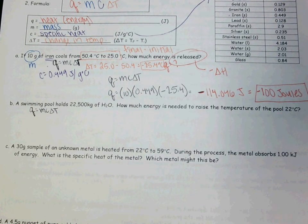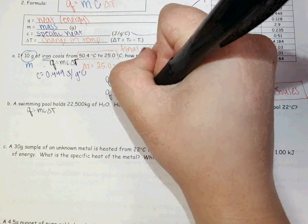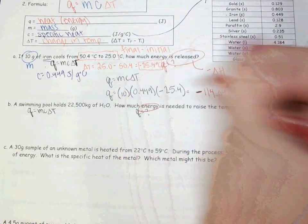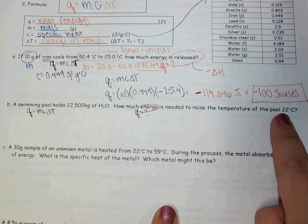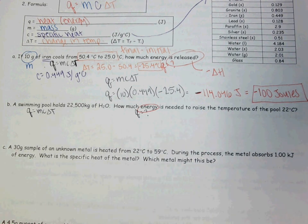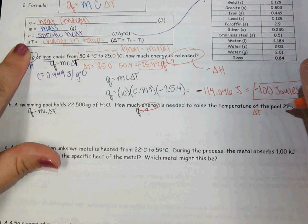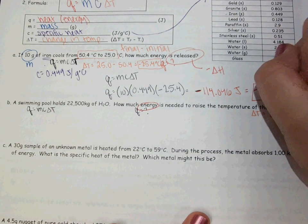What is the question asking us for? Energy — so what variable is that? Q. So just like before, I'm going to say Q equals question mark because that is what the question wants. If you are raising the temperature of the pool by 22 degrees Celsius, this 22 degrees Celsius is how much the temperature was changed by. So that 22 degrees Celsius is already my delta T — my change in temperature is positive 22 degrees Celsius.